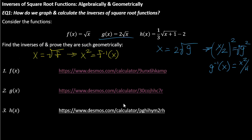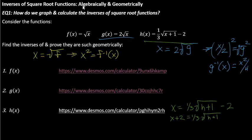So last one — let's look at h of x. I'll do this in green. If h of x equals one-third the square root of x plus one, all minus two, I'm going to flip: x equals one-third the square root of h plus one, all minus two. I add two to both sides, multiply by three on both sides, then square both sides. That gives me nine times (x plus two) squared minus one equals h inverse of x.